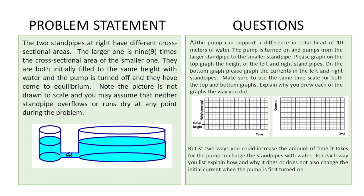This is the problem we're going to be solving today. We have two standpipes with different cross-sectional areas — the right one is nine times bigger than the smaller one. They are both initially filled to the exact same height with water, and there's a pump in the middle which supports a difference in total head of 10 meters of water. The pump turns on at t = 0 and pumps from the larger standpipe to the smaller one. We have to graph the height of the left and right standpipes, graph the currents in both, use the same time scope for both graphs, and explain why we drew each graph the way we did.